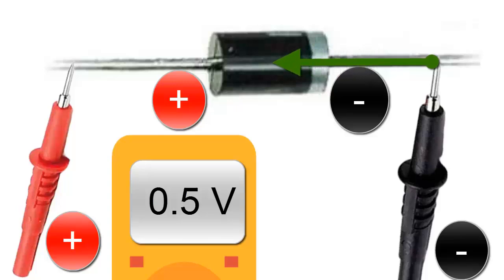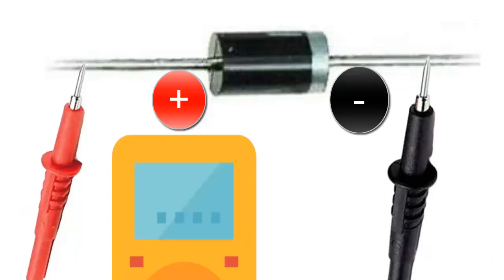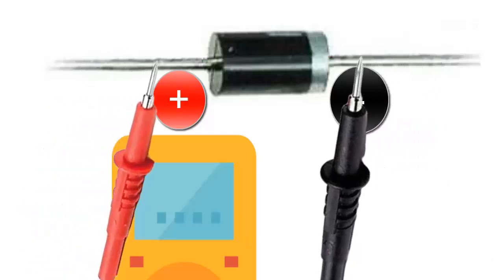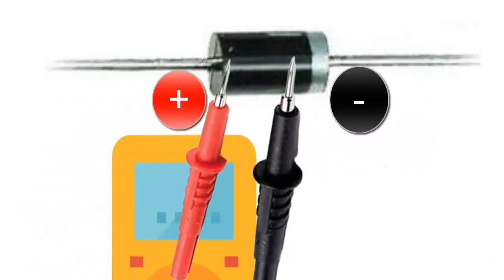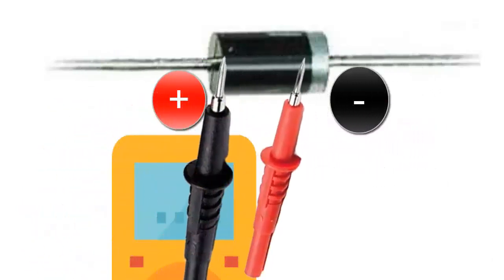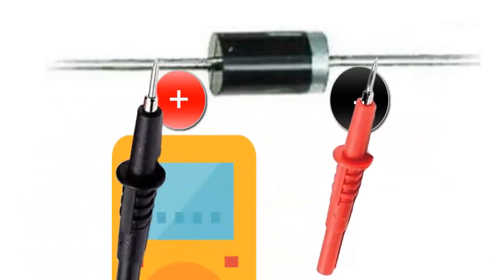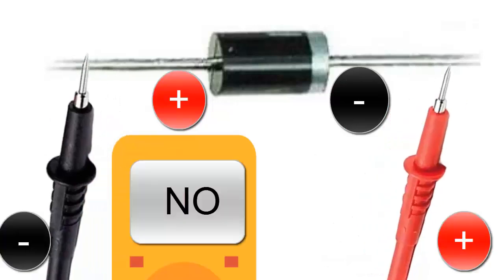A diode is a two-terminal semiconductor device that allows the flow of electric current only when the voltage across its terminals has the correct polarity. When the bias is reversed, the diode does not allow electric current to pass through its terminals.